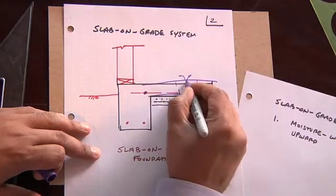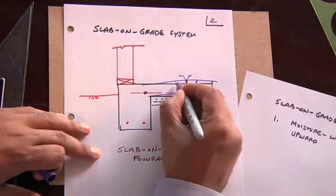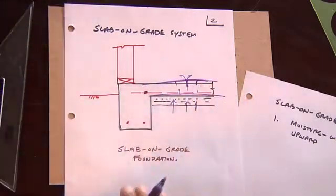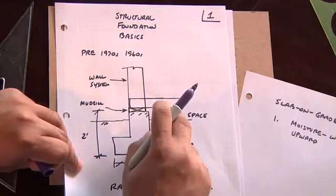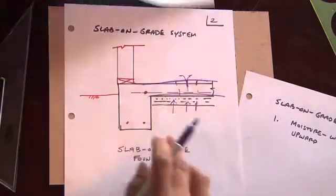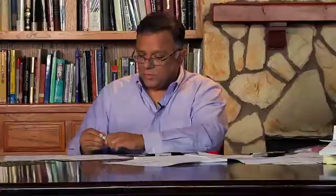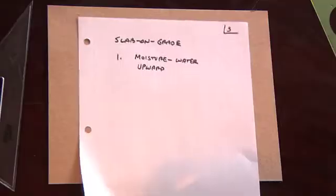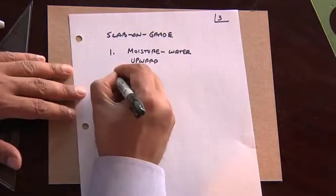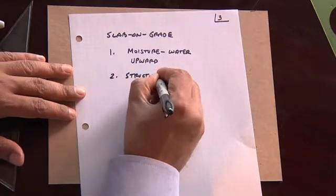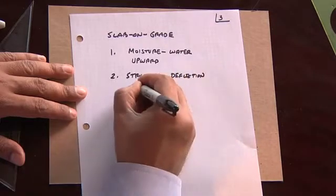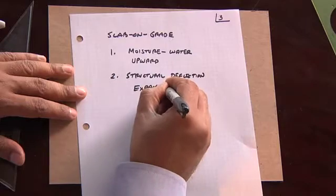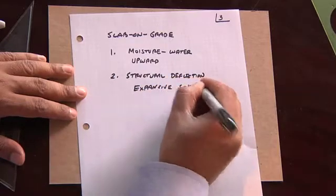And what usually involves there is you have to come in here and fix these cracks. It causes all kinds of leveling issues. This kind of problem, very difficult to happen on a crawl space zone because you have this gap. And so slab-on-grades are very susceptible to that problem. You have upward moisture. You have structural deflection occurring from expansive soil. Very common problem.